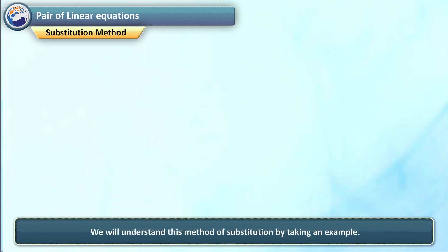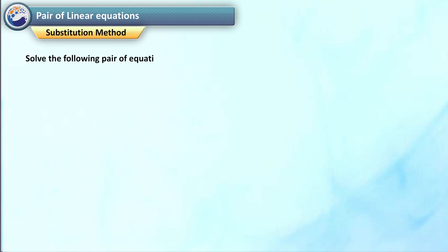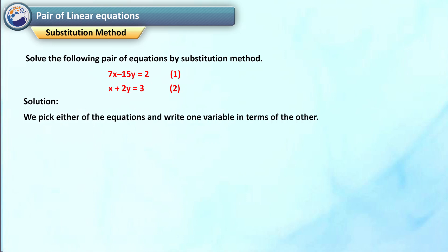Substitution method. We will understand this method of substitution by taking an example. Solve the following pair of equations by substitution method: 7x minus 15y is equal to 2 — equation 1, and x plus 2y is equal to 3 — equation 2. Solution: We pick either of the equations and write one variable in terms of the other. Let us consider equation 2 and write it as x is equal to 3 minus 2y — equation 3.